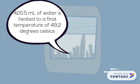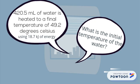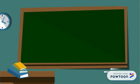Our question is 420.5 milliliters of water is heated to a final temperature of 49.2 degrees Celsius using 18.7 kilojoules of energy. What is the initial temperature of the water?